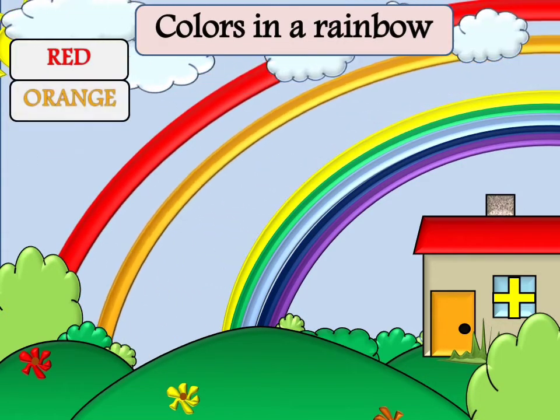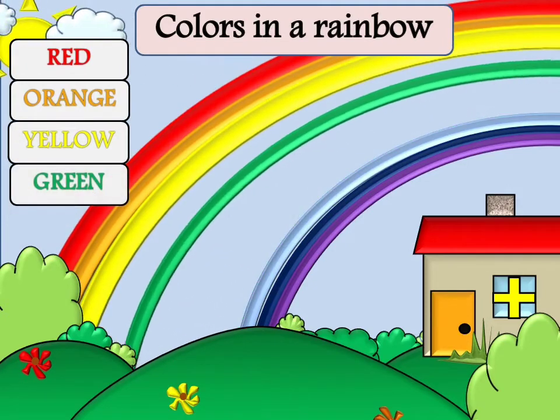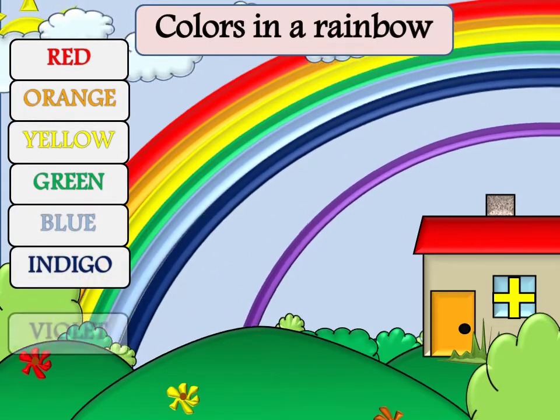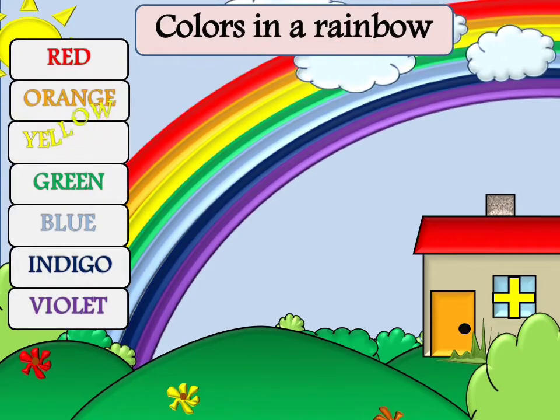Red, Orange, Yellow, Green, Blue, Indigo and Violet. These are the seven colors of a rainbow.